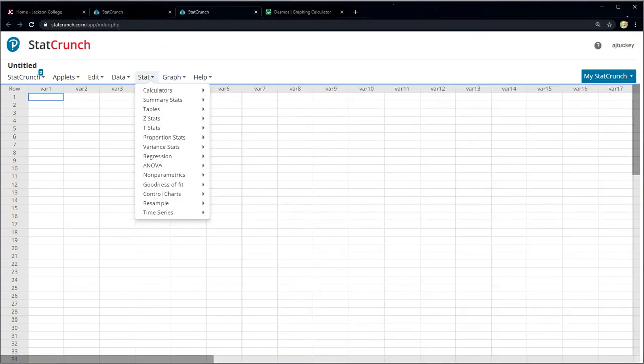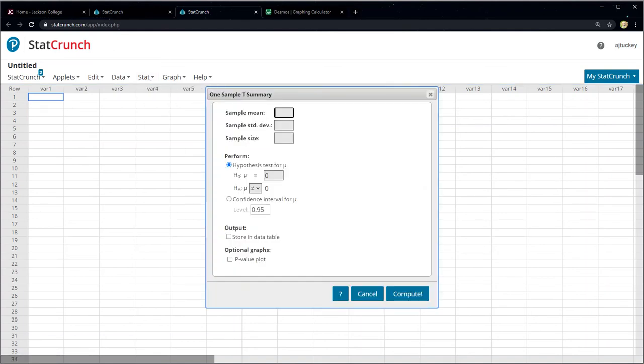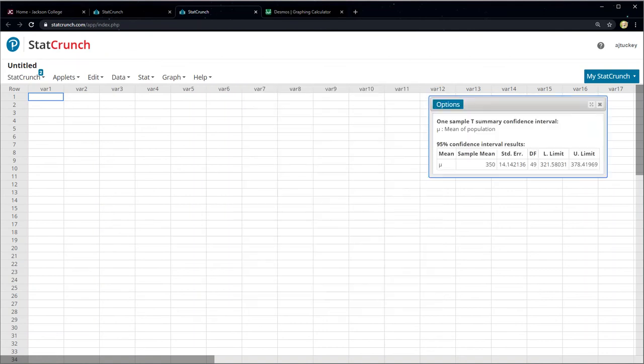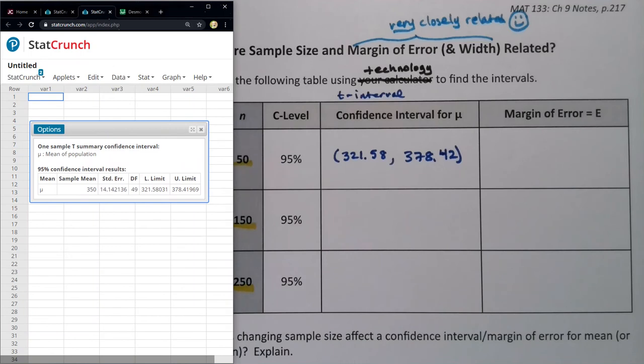And then you're looking for t-stat. There's that t-stat. One sample. Now you don't have data. So it's the same choice you have to make on the calculator. So you're going to choose 'with summary'. And when you have summary statistics, our sample mean was 350. Our sample standard deviation was 100. And our sample size was 50. And then we're going to go down here to a confidence level and choose 0.95, which is fine and click compute. And there is our confidence interval right there. Same interval that the calculator came up with 321.58, 378.42.